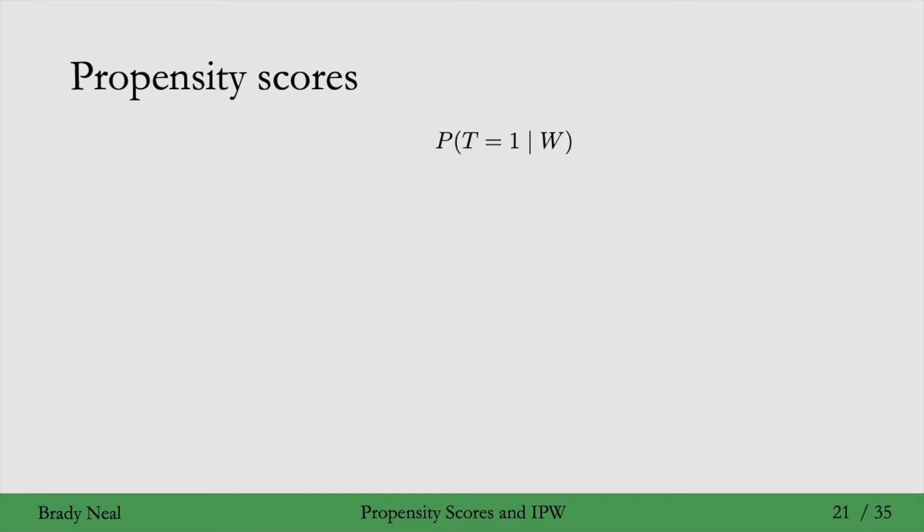The propensity score is just the probability of taking treatment equals 1, given the relevant covariates W that we'd be adjusting for. This quantity describes your propensity for taking treatment, how likely you are to take treatment given W. We'll use e(W) to denote the propensity score.